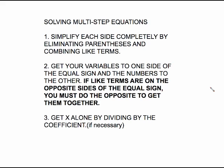Then get your variables to one side of the equal sign and your numbers to the other. If you have like terms on opposite sides of the equal sign you must do the opposite to get them together and then get x alone by dividing by the coefficient if necessary.